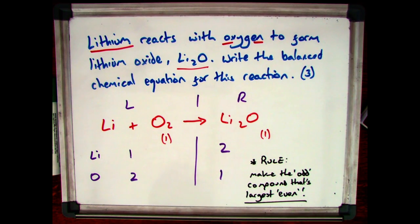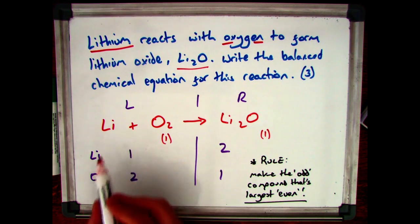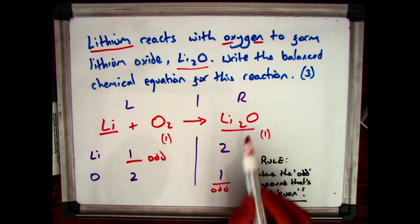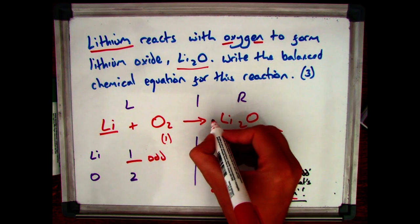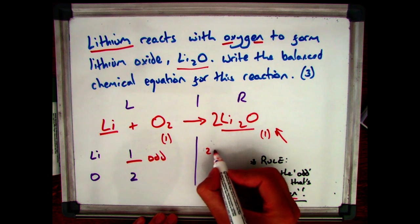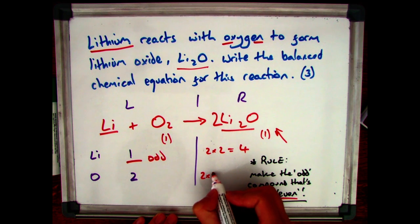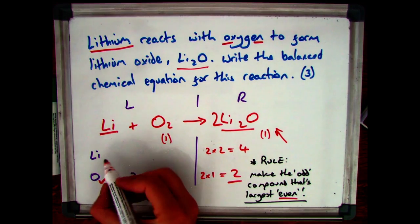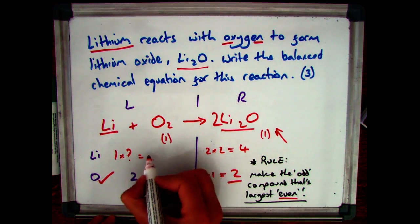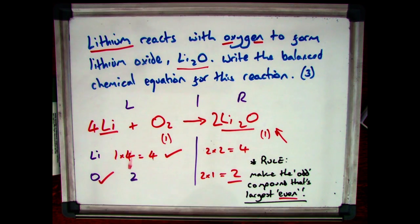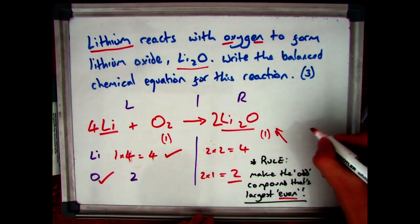So let's have a go at doing it. Remember my rule where I said take the compound that's got an odd number and make it even. I could go with lithium or oxygen — both of them are odd. However, my oxygen over here is in the largest compound, so let's make it even by putting a two in front of it. I then recount: instead of having two lithiums I've doubled that, so two times two gives me four. And oxygens — I had one, I've doubled it, so two times one gives me two. So my oxygens are now balanced. I've got four lithiums on the right but only one on the left, so I put a four in front of my lithium — remember I'm multiplying, not adding. So that's now balanced, giving me my third mark.